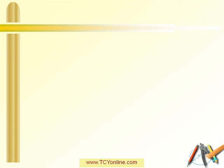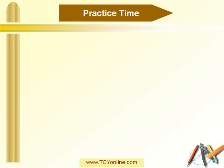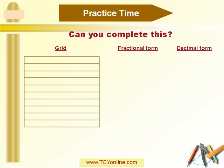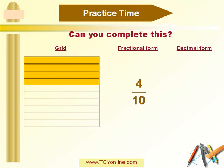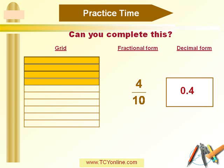Now, after knowing about 1 tenth and 1 hundredth, let's try this question. We need to complete the given box. A grid is given with 4 bars shaded in yellow out of a total of 10 bars. So we can write this in fraction form as 4 over 10. We need to write the decimal form for this. 4 over 10 means 4 out of 10 — that is, 4 tenths. 4 tenths can be written as 0.4. So the decimal form for 4 over 10 is simply 0.4.